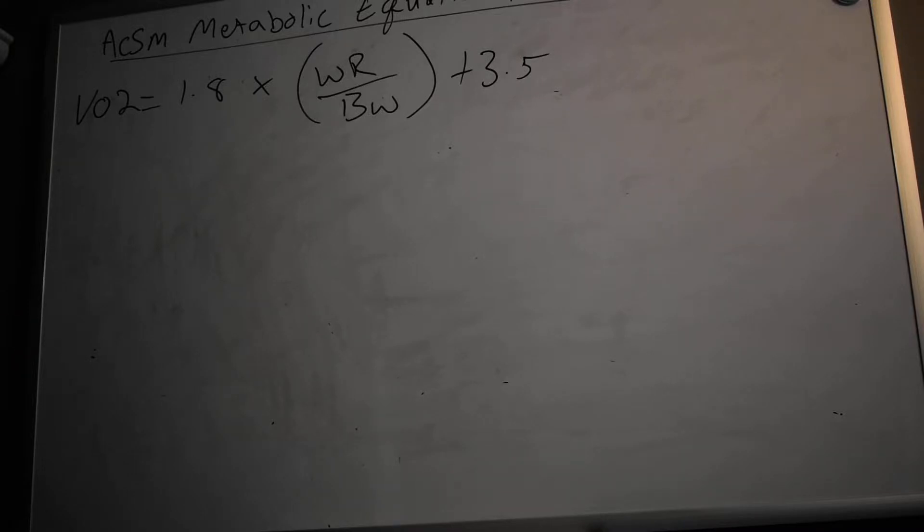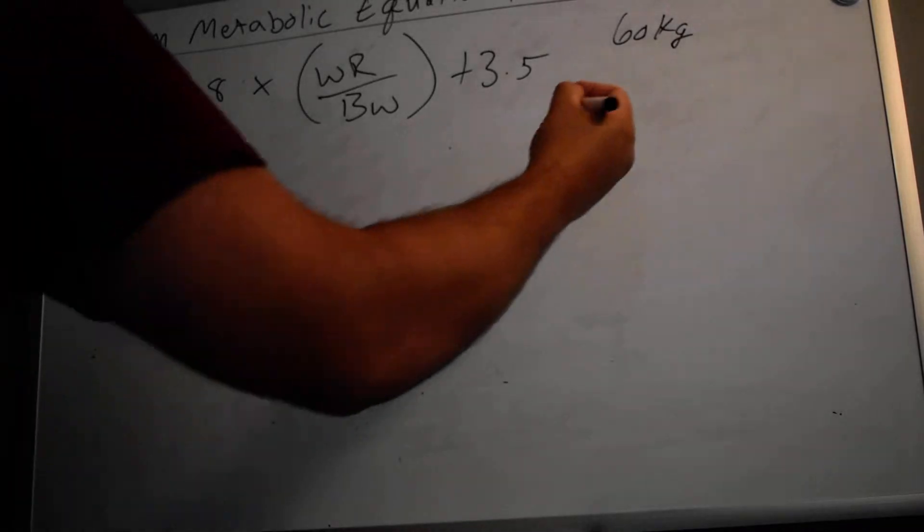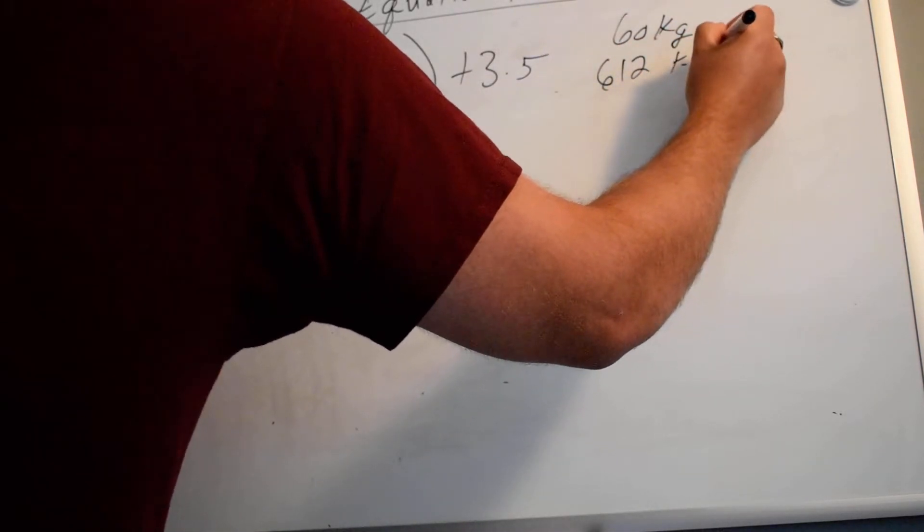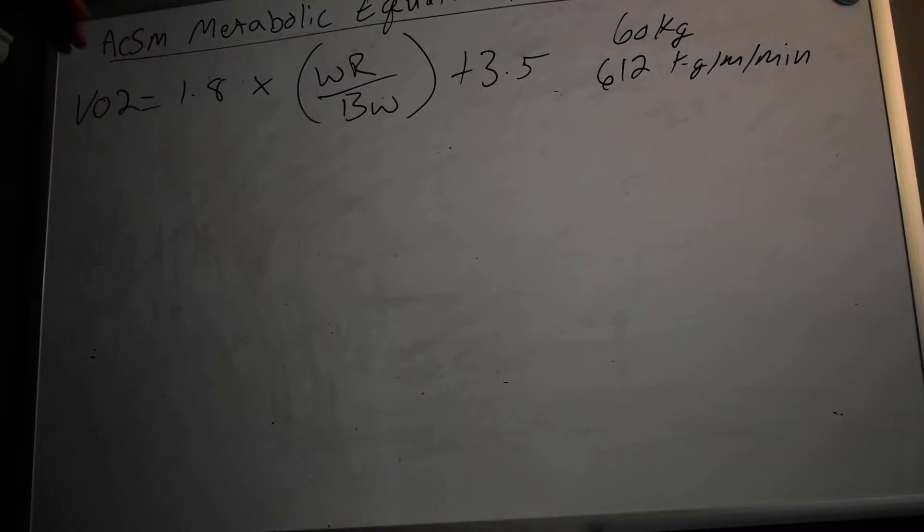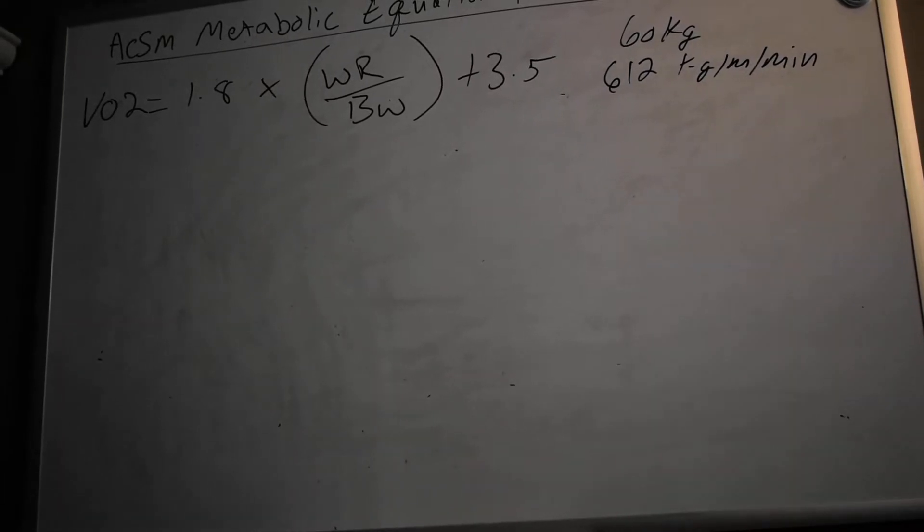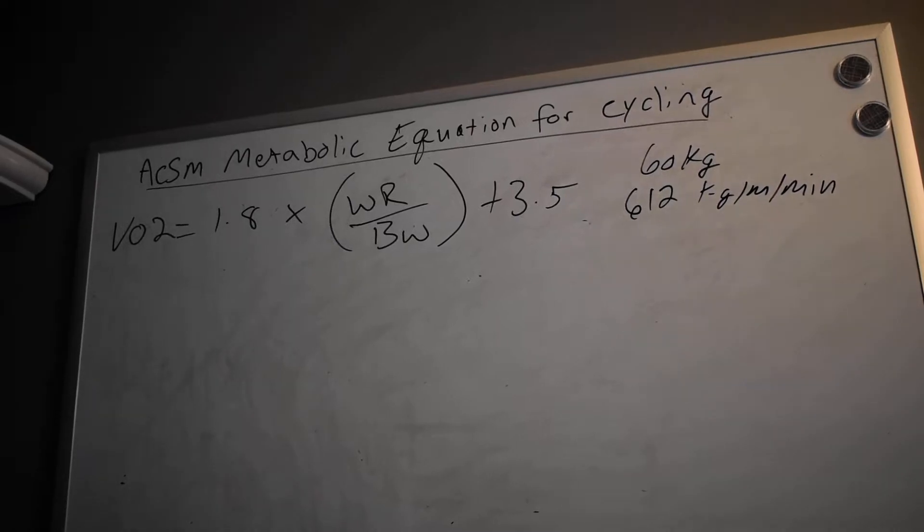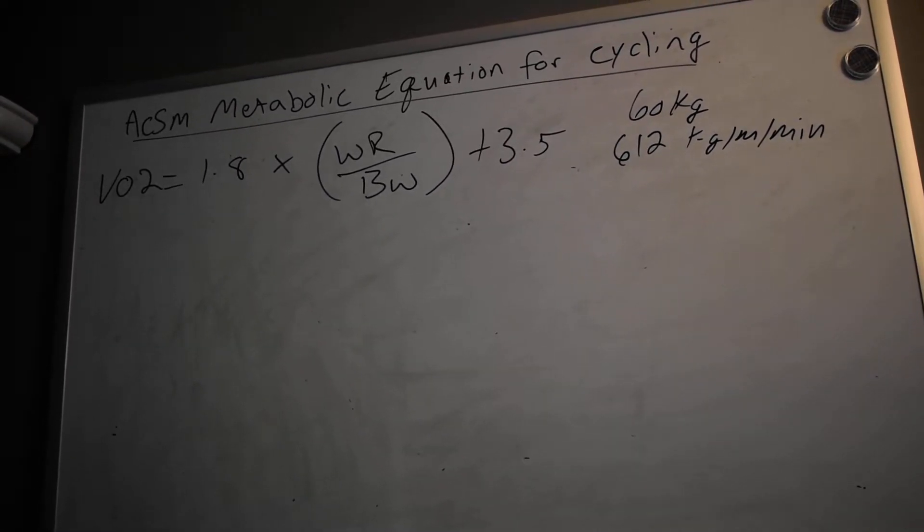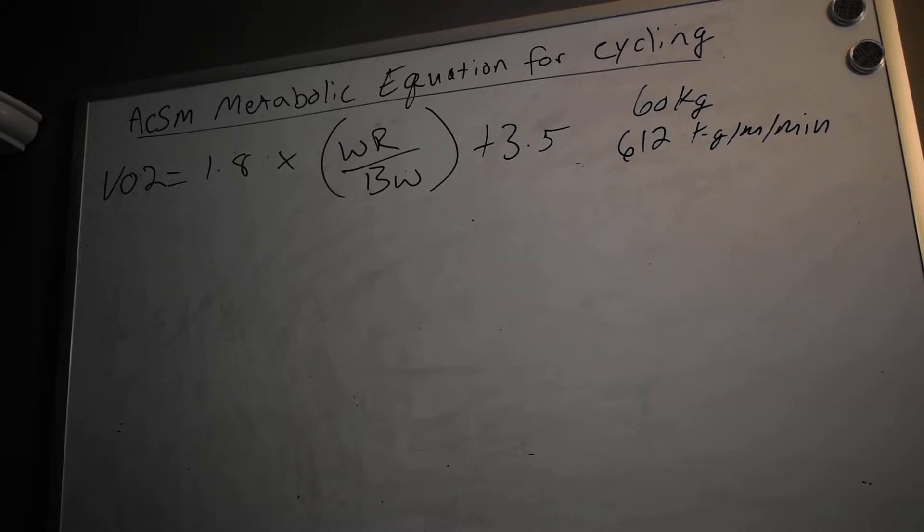Last week I think I used an example of a 60 kilogram individual exercising on the cycle at something like 612 kilogram meters per minute. Now if it's presented to us in this way, we can just go right ahead and plug the numbers into the equation and we can get our VO2. However, if we don't have those equations in the proper format, then we do have to do some conversions.